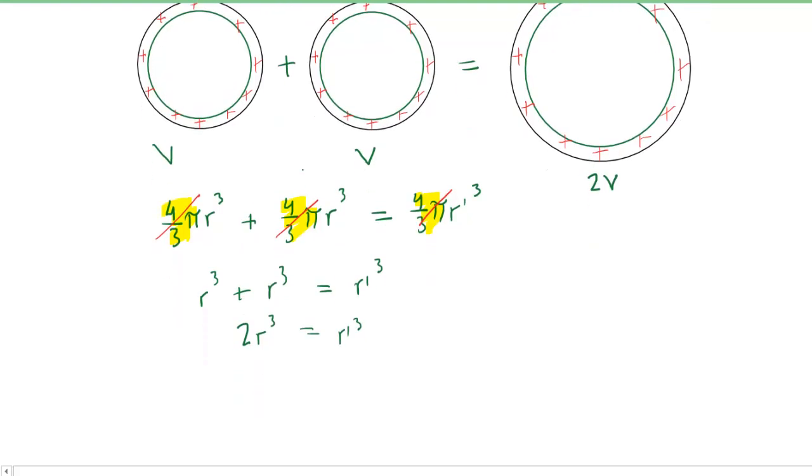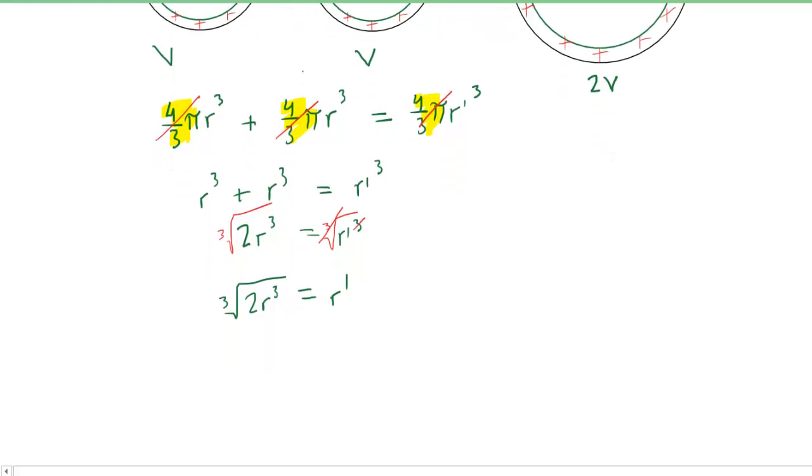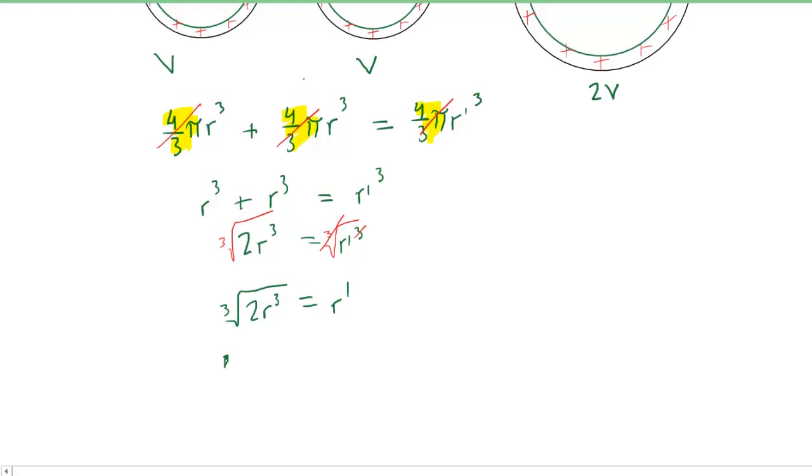And then to finish solving for R prime, we would actually have to cube root both sides. So it gets a little wonky here, but we'll take the cube root on both sides. What that does is the cube root and the cube will actually cancel out. That gives us R prime, which will be the cube root of 2R cubed, a bit of a messy quantity. It turns out you can slightly clean that up if you split the radical into two radicals. So in other words, if you have the cube root of 2 times the cube root of R cubed, what happens is over here again, the cube root and the cube cancel. So you're finally left with the cube root of 2 times just R. And that's going to give you the new radius of that larger spherical drop.